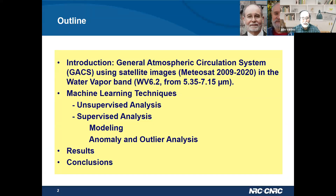This work is done using satellite images from the Meteosat satellite, which is operated by the European Space Agency, and it produces images of water vapor in a certain wavelength which is listed there. We use machine learning techniques composed of a mixture of unsupervised and supervised methods, including modeling and anomaly and outlier analysis. I'm going to present a short outline of the methods, but most importantly the results and lessons learned.